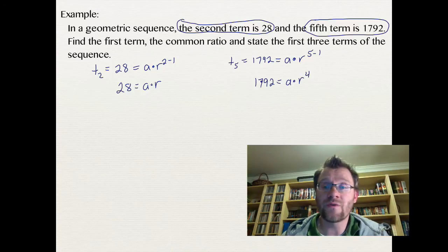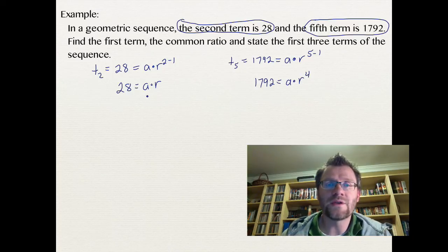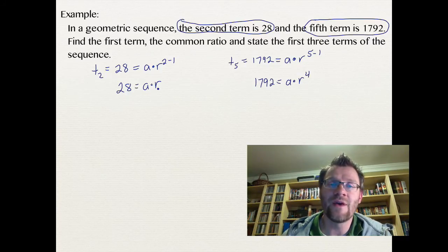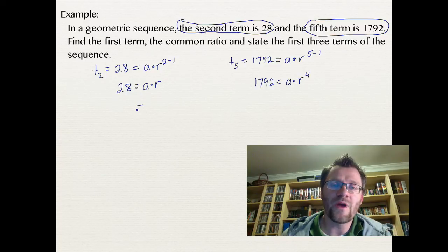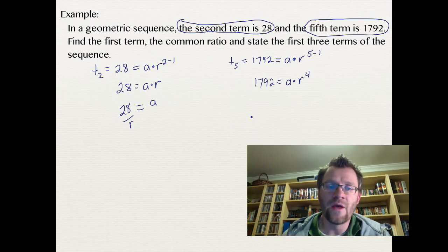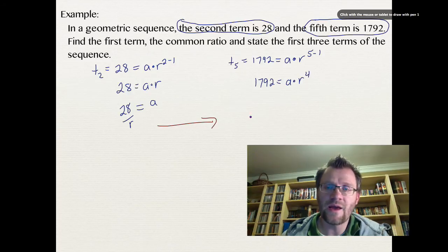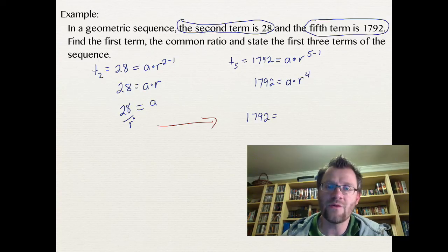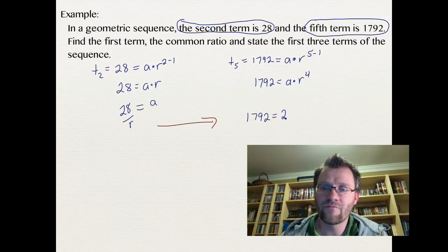Now again, we have two equations with two variables in each. We need to use substitution in this case in order to solve for A and R. What I'm going to do is I'm going to solve for A in the first equation, and by doing that, I'm just going to divide both sides by R. So now I get 28 over R. So if I take that and I substitute it over into this equation, I now get 1792 equals, instead of A, I know it's 28 over R, and I still have R to the fourth.